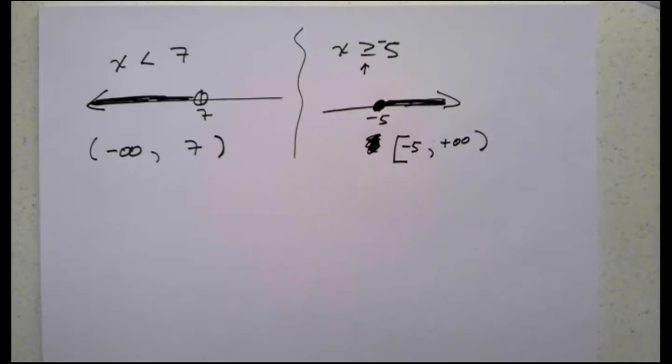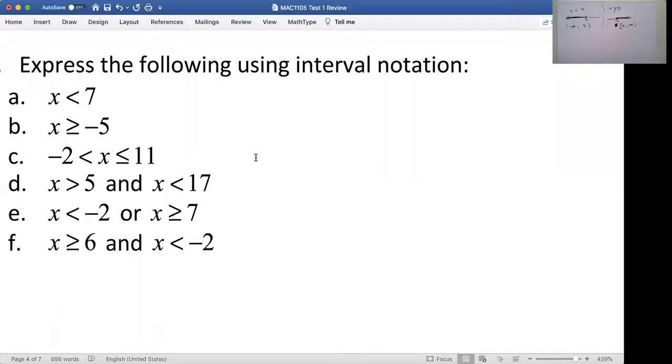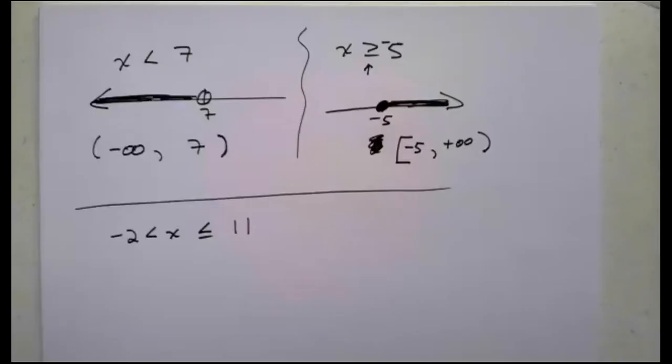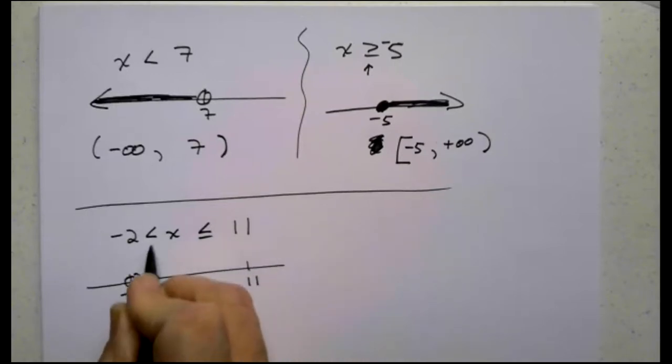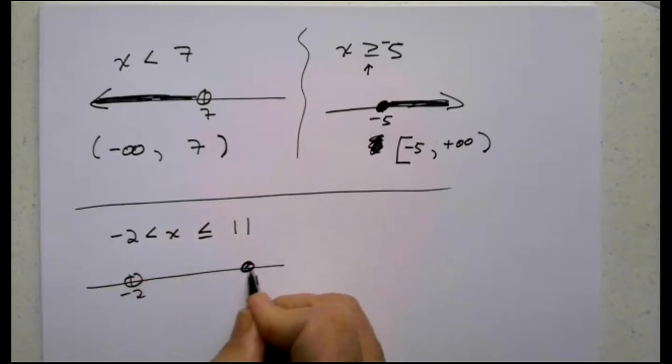Next up we have negative 2 less than x less than or equal to 11. Let's look at that. What will that be? We have negative 2. We have 11. It does not include negative 2 because it's less than. It does include 11 and it's everything in between.